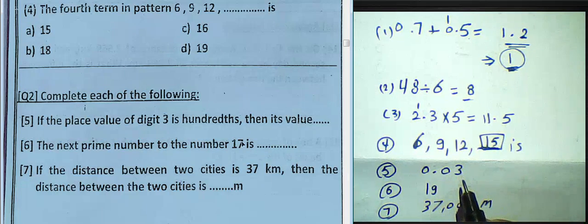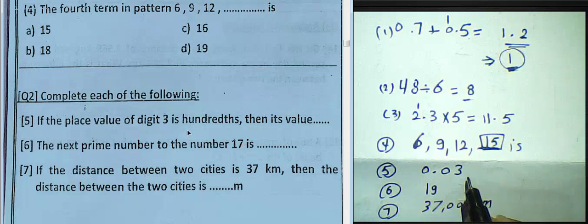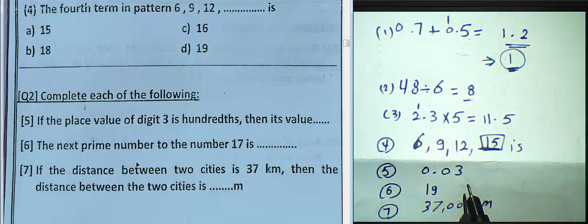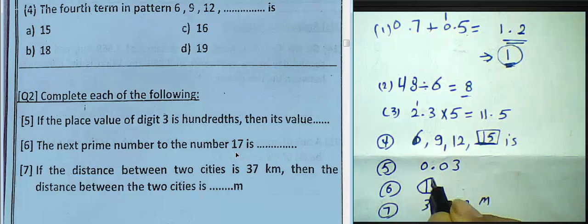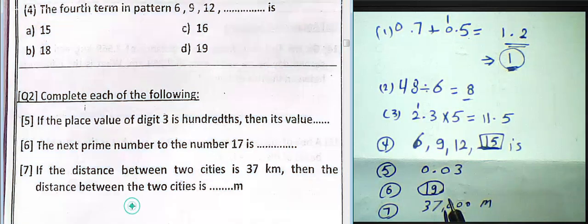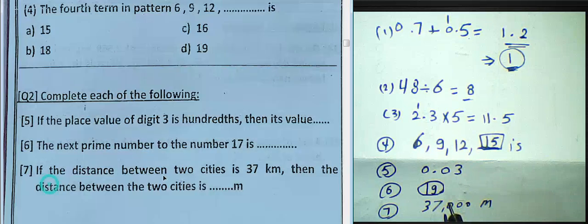Question 6: the next prime number after 17. He is asking about the prime number that comes after 17. The answer is 19.